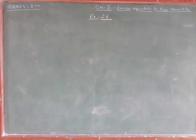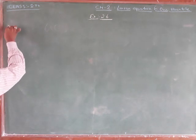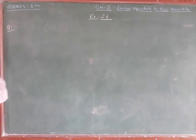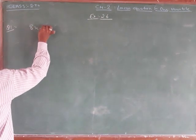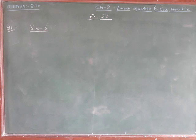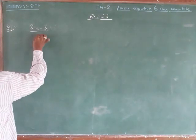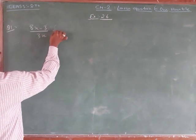Good morning friends. We have different possibilities. That's exercise 2.6, question number 1. 8x minus 3 upon 3x equals to 2.